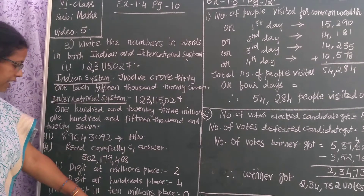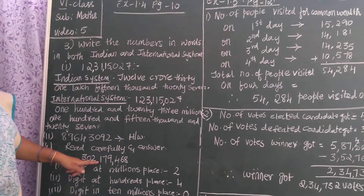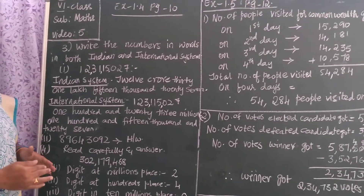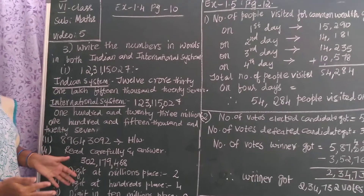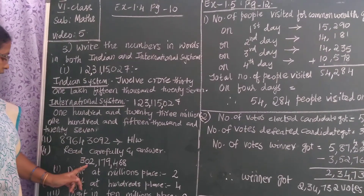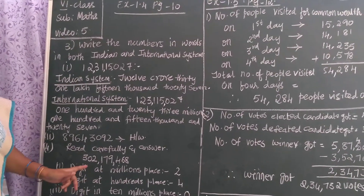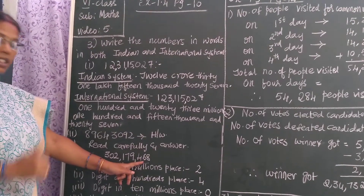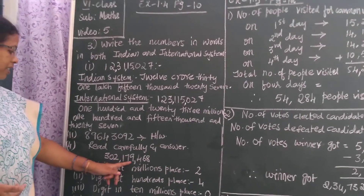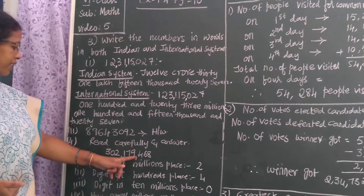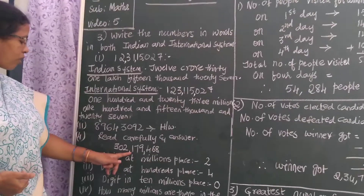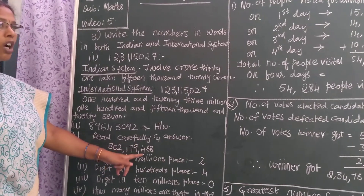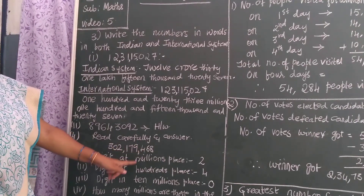The question number given is 3, 0, 2, 1, 7, 9, 4, 6, 8 and some questions are given here. Seeing this question, you should be able to know whether it is in Indian system or international system. It is in international system because after every three digits from the right side there is a comma.